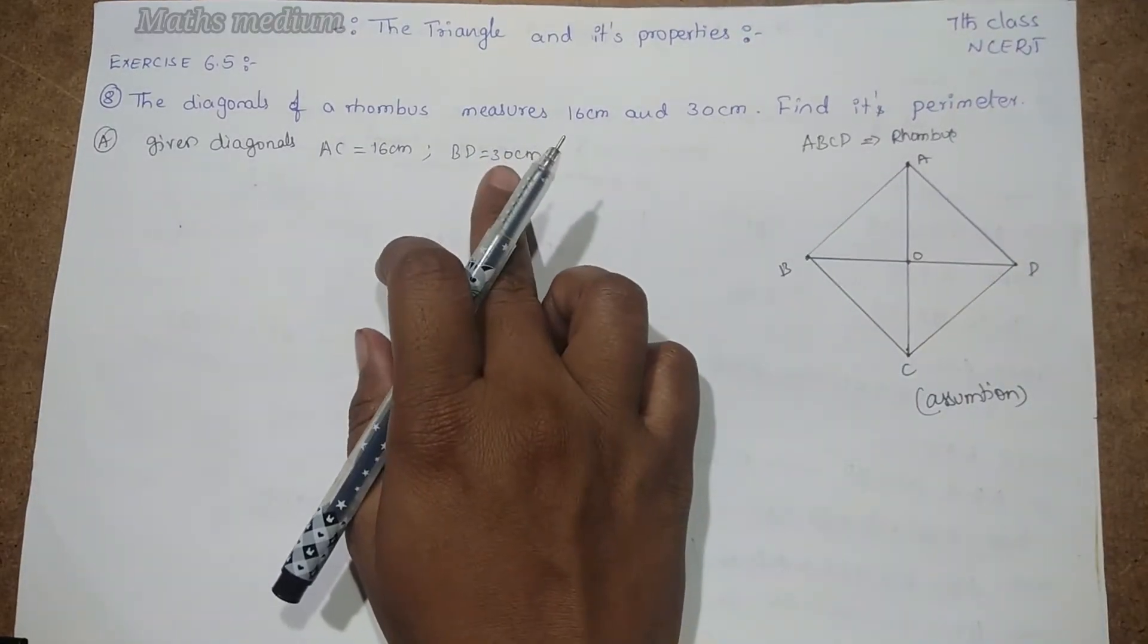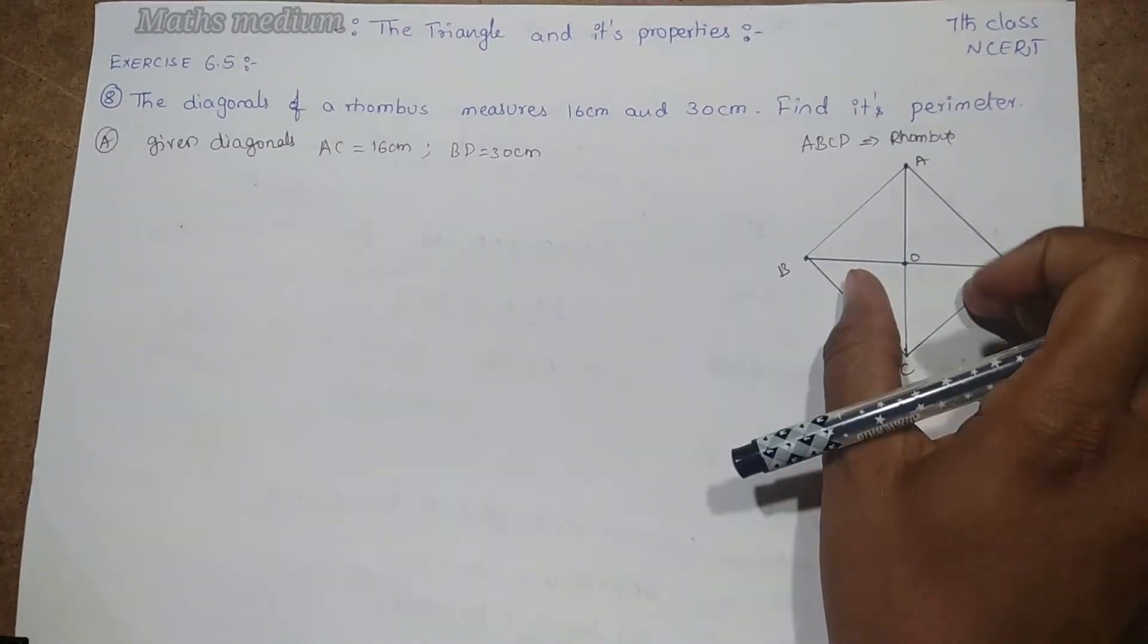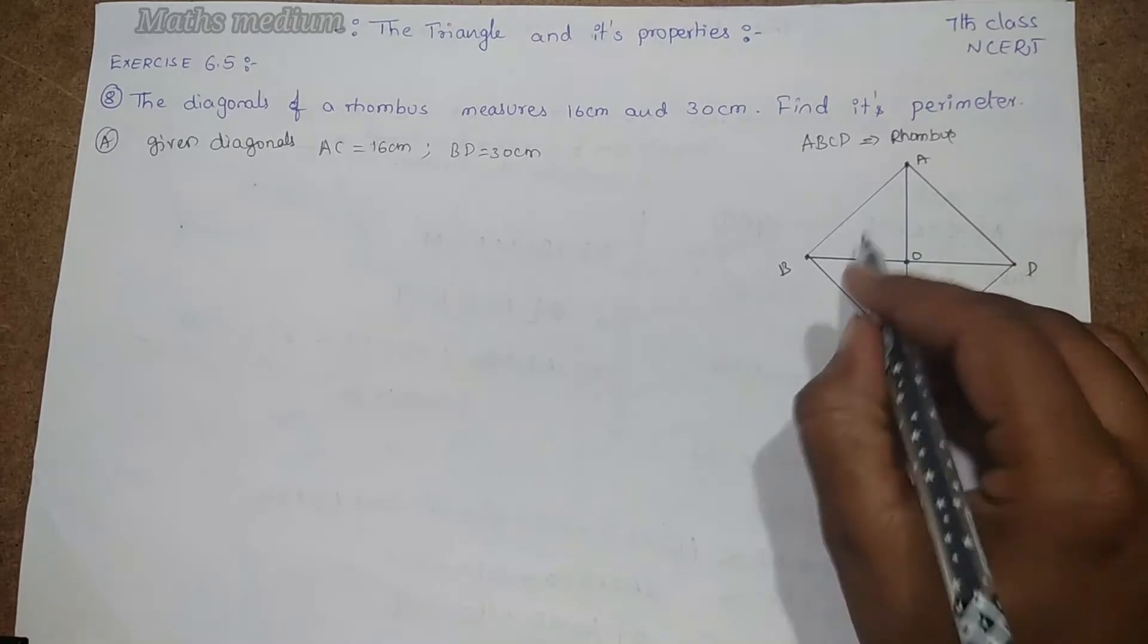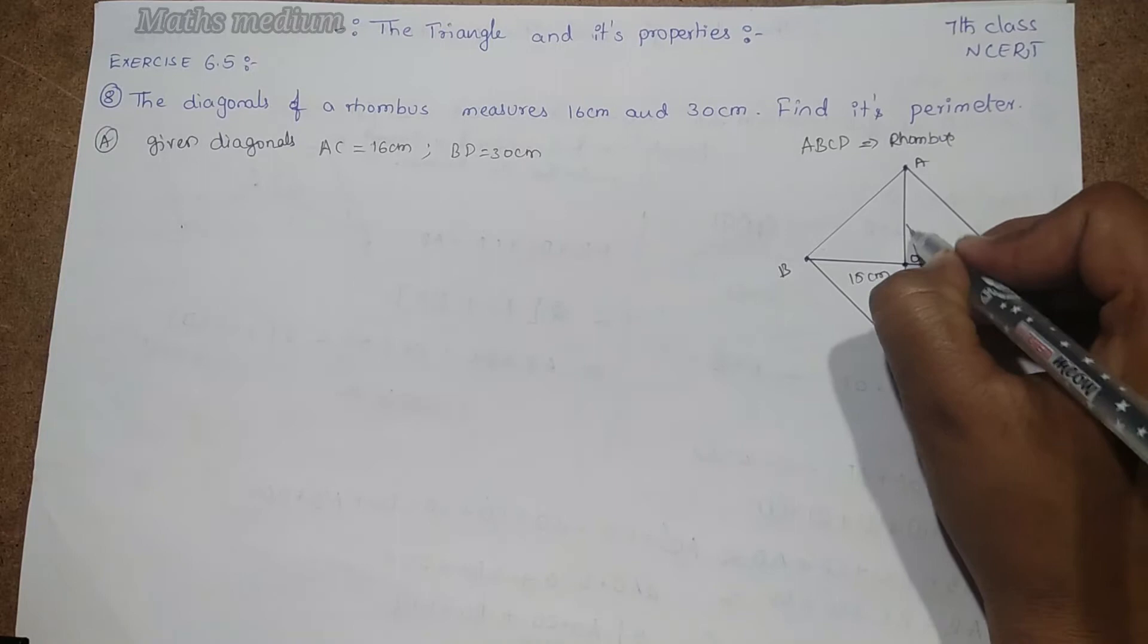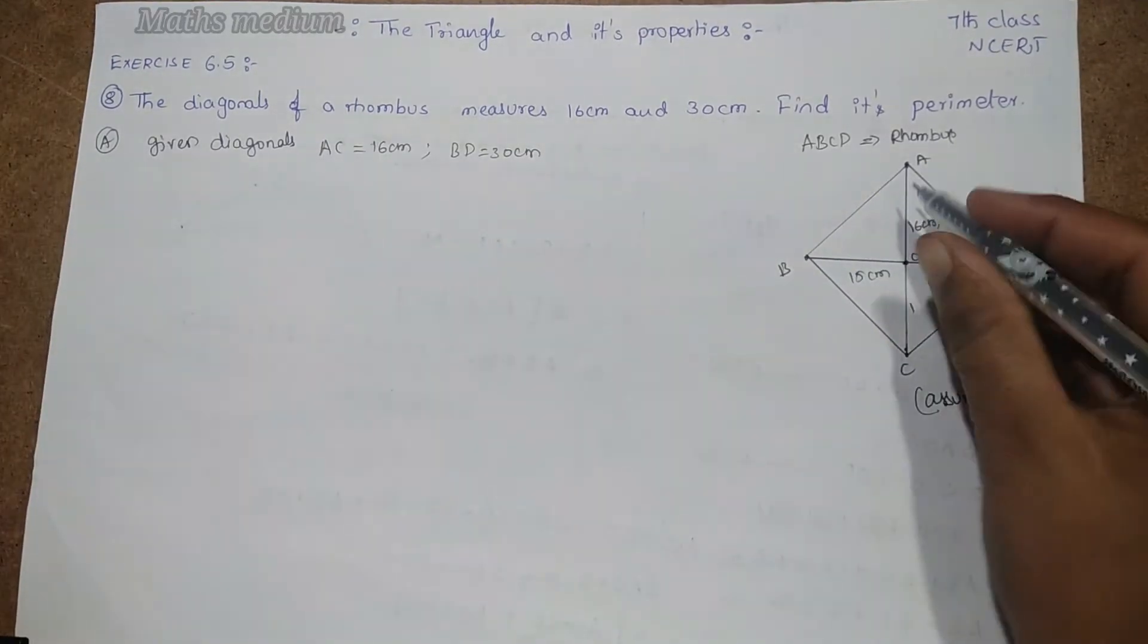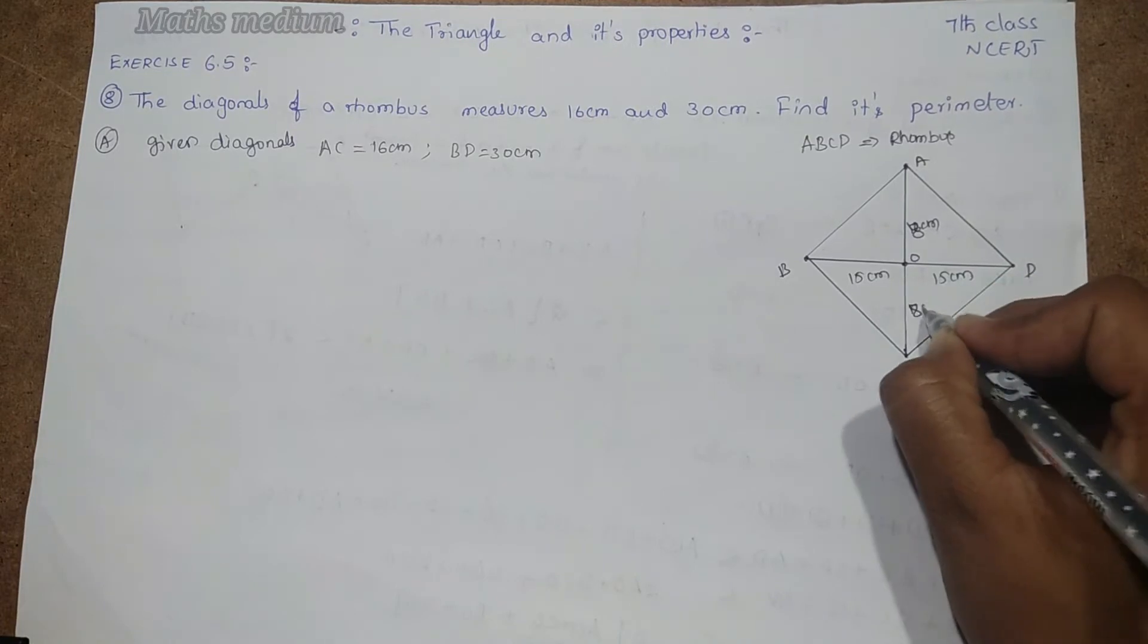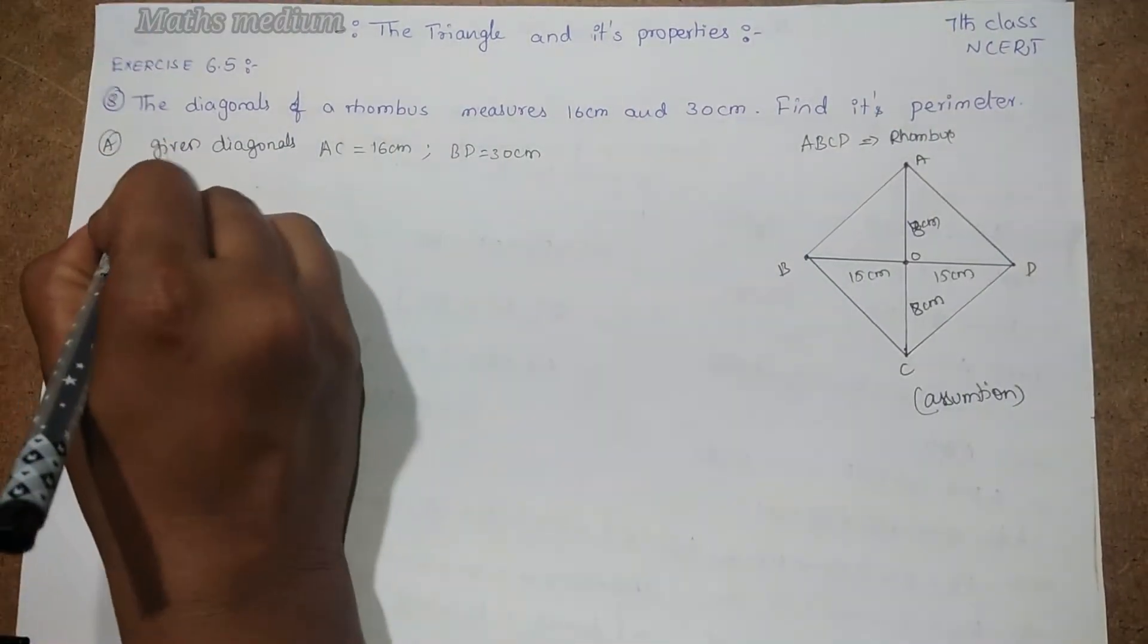Now BD equals 30 cm, intersecting at O. The diagonals intersect at the midpoint. So it is 15 cm, and this is also 15 cm. Here the total is 16, but half is 8 cm. We have to write this in the form of steps.